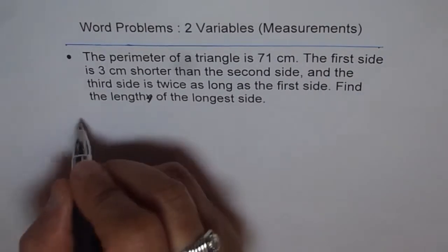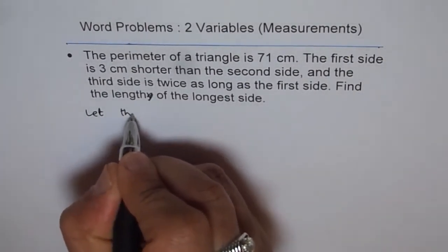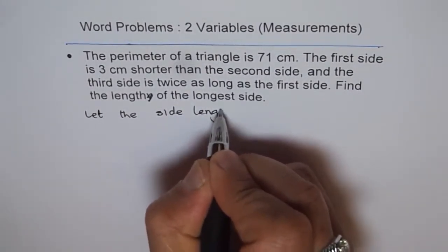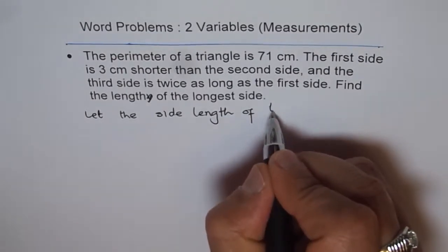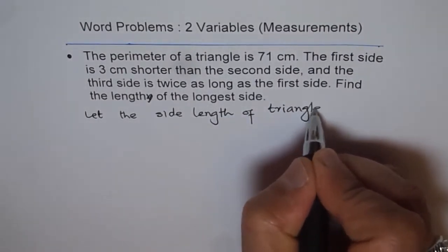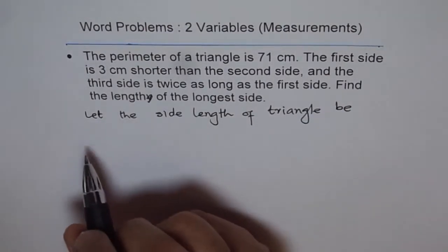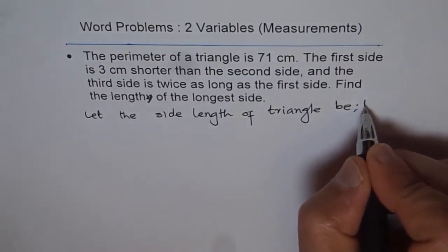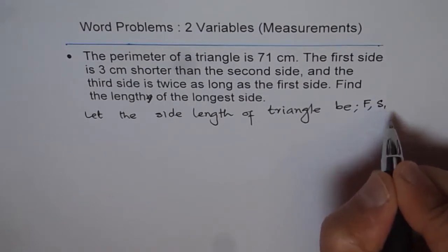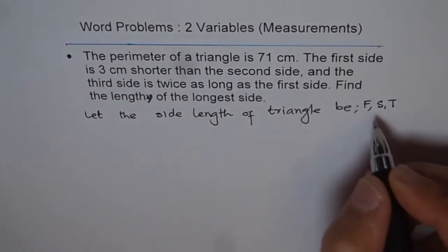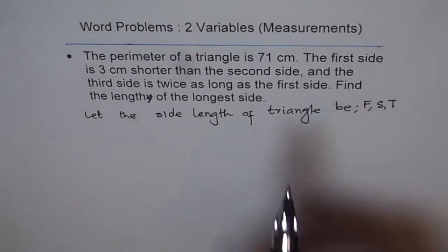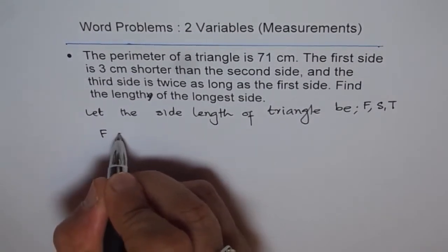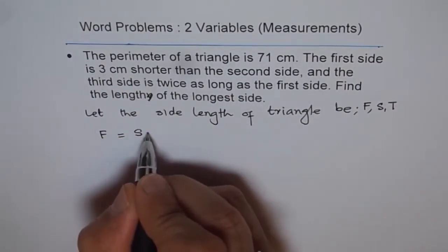Let's define variables first. We'll let the side lengths of the triangle be F for the first side, S for the second side, and T for the third side. Now reading the question: the first side is 3 cm shorter than the second side, which means F equals S minus 3.